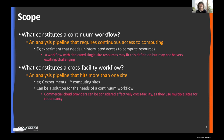For example, this might be an experiment that's running that needs uninterrupted access to compute resources for analyzing data coming off the experiment — something we think of as urgent computing, that really requires continuous computing resources in order to get work done. Another example might be a workflow that needs continuous access to dedicated single-site computing resources.